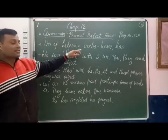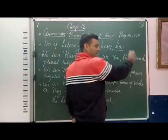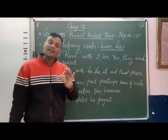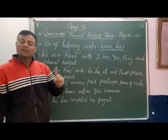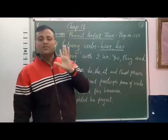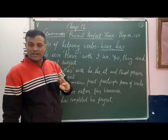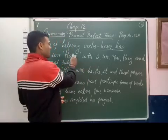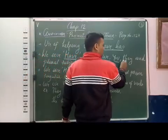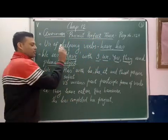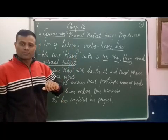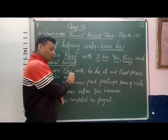In present perfect tense we use helping verbs 'have' and 'has'. 'Have' we use with I, we, you, they, and plural subject. 'Has' is used with third person singular.